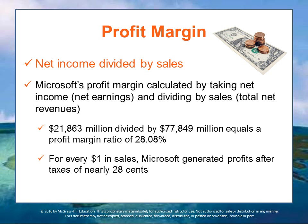Microsoft's profit margin is calculated as follows: profit margin equals net income — that is net earnings — divided by sales, which is total net revenue. Microsoft's net revenue was $21,863 million divided by its sales of $77,849 million, which equals a profit margin of 28.08%. So for every $1 of sales, Microsoft generated a little over $0.28 of profit after taxes. This is a very good number for profit.